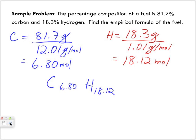So the next step is, well, we know we can't keep this formula as is. So we're going to divide by the lowest mole between the two, which is 6.80. So when we divide these two, we get C just 1, and H? It was 2.66. 2.66, right?